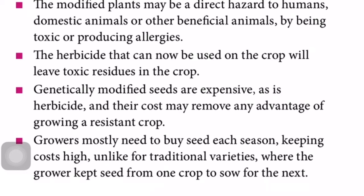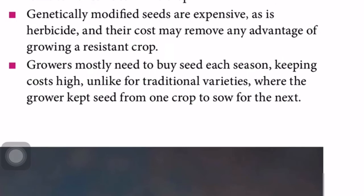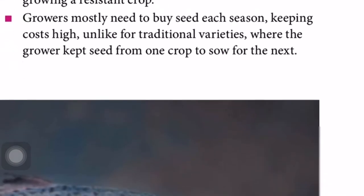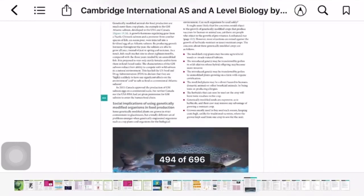Other problems include: herbicides used on herbicide-resistant crops may leave toxic residues on the crop, which could be consumed if the crop is not washed properly. Genetically modified seeds are expensive, as are the herbicides, and their costs may remove any advantage of growing a resistant crop. Growers mostly need to buy seed each season, keeping costs high — unlike traditional varieties where the grower kept seeds from one crop to sow for the next.